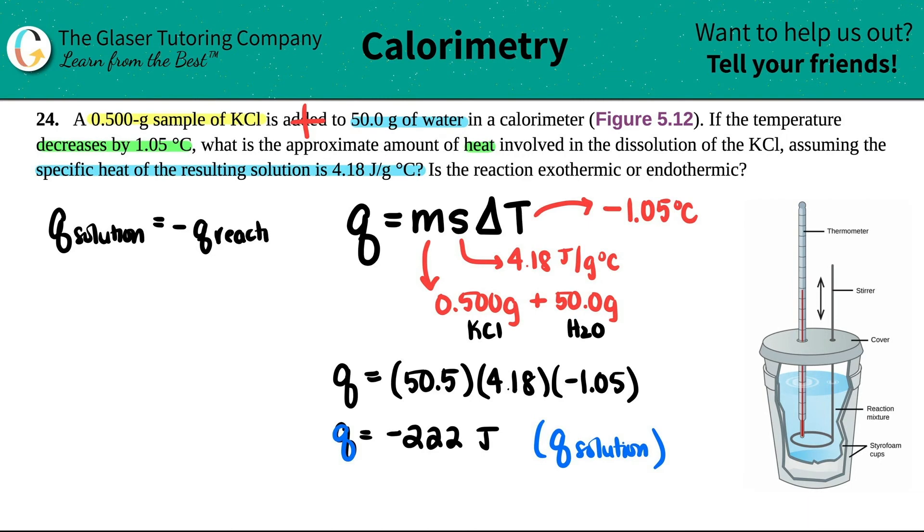Basically, this is the whole idea of system versus surroundings. The reaction is the system. The solution is the total surroundings. So we really want to find out what's going on with the system. So all you do is you always just change this sign. So the Q for the reaction would be a positive 222 joules. And that's the answer.